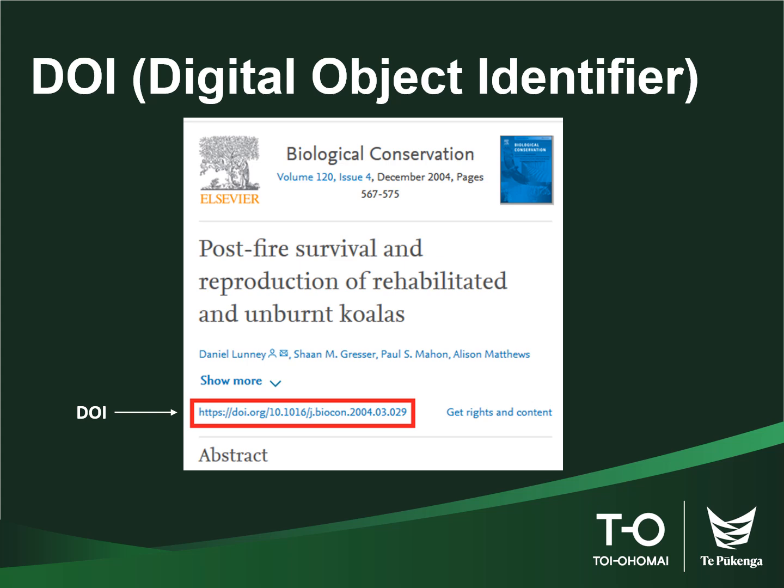A DOI stands for digital object identifier, which is a number that identifies a particular document and helps the reader to find it online.